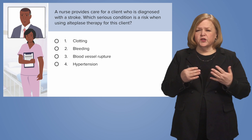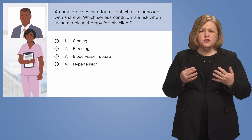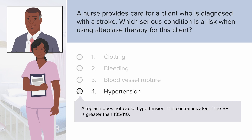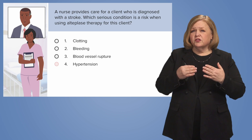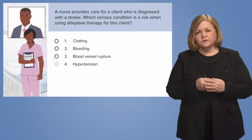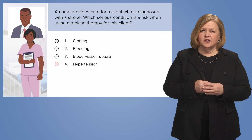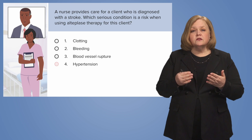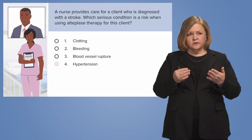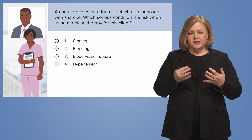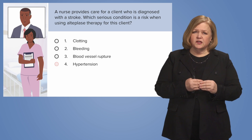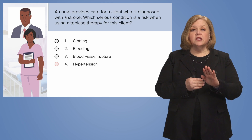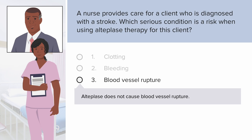Let's start working through these. Do thrombolytics cause hypertension? No, they don't. So I'm going to eliminate number four, because thrombolytics don't cause hypertension. What about clotting — do thrombolytics cause clotting? They really mess with the bleeding; I'm not sure on that one. Let's look at what else we can consider. What about blood vessel rupture? No, there's no connection between thrombolytics and blood vessel rupture, so I'm going to eliminate that one.